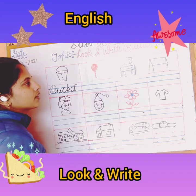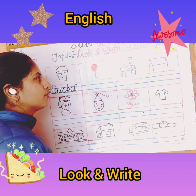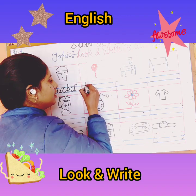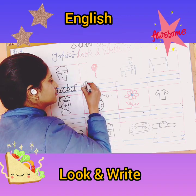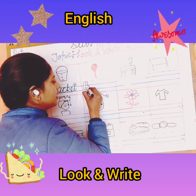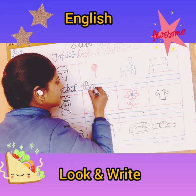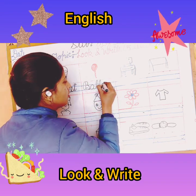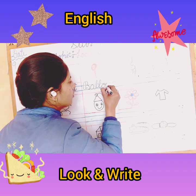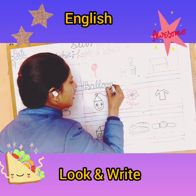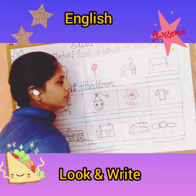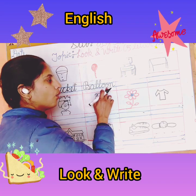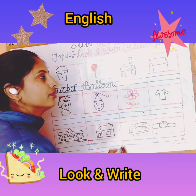See the next picture — what is this? This is a balloon. What is the spelling of balloon? B-A-L-L-O-O-N, Balloon. Write it down.